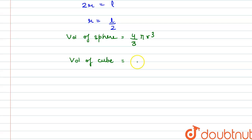Let's denote the volume of sphere as Vs and denote the volume of cube as Vc. So it will be 4 by 3 pi r cube divided by l cube.